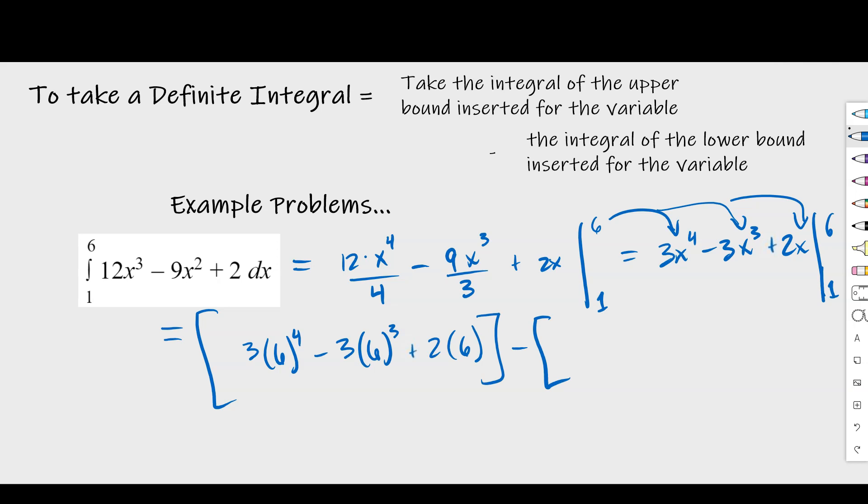Subtract the lower bounds. Lower bound is just one, so that's going to be 3 times 1 to the fourth minus 3 times 1 to the third plus 2 times 1, and put that over here. And I believe if you do the numbers correctly, you end up with this. So that's how you would go about evaluating and solving for the amount of area in between the two points that we signify on the x-axis, so the upper and the lower bounds.